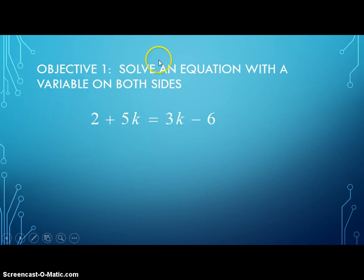Our first objective is to solve an equation with a variable on both sides. This is a pretty basic example, as easy as it gets. Call these level one problems. The only rule that I have for myself when I'm solving these problems is that I want to make sure, or I try anyway, when I make my first move with the variables to keep that variable term positive. So instead of subtracting 5k from both sides, I'm going to subtract 3k from both sides.